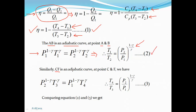Similarly, according to the indicator diagram, CF is an adiabatic curve. At points C and F, we have P2 raised to (1 minus gamma) into T3 raised to gamma equals P1 raised to (1 minus gamma) into T4 raised to gamma. Therefore, T4 upon T3 equals (P2 upon P1) raised to (1 minus gamma) upon gamma. This is equation 3.